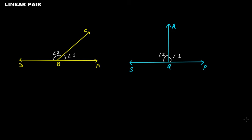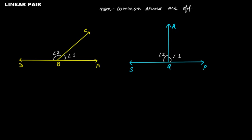In our previous video, we learned about adjacent angles, and that concept of adjacent angles will be used here in linear pair. In a linear pair, two adjacent angles are arranged such that the two non-common arms are opposite rays.